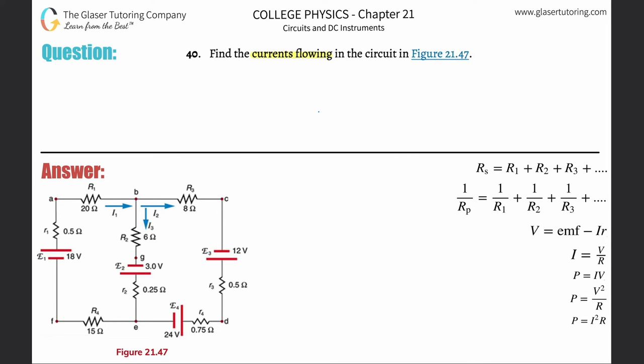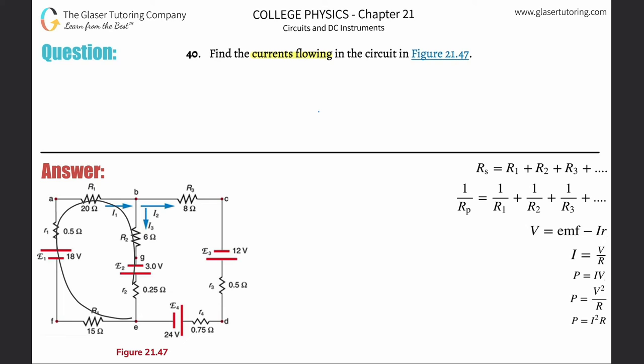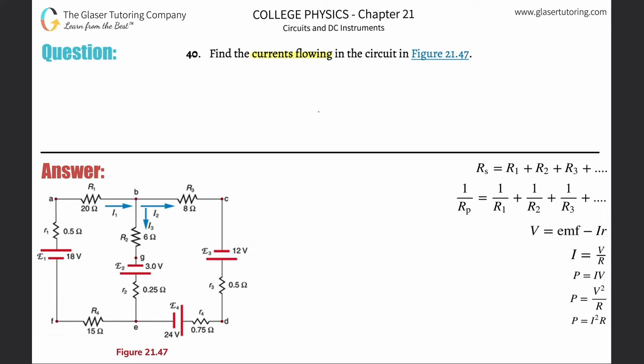Number 40: find the currents flowing in the circuit in figure 21.47. For a review, check out numbers 35 through 39 — watching those and then this one should really help with identifying currents. When analyzing a complex circuit like this, there are almost three circuits in one: one circuit here, another circuit here, and then a big outer circuit. We're probably going to need three equations.